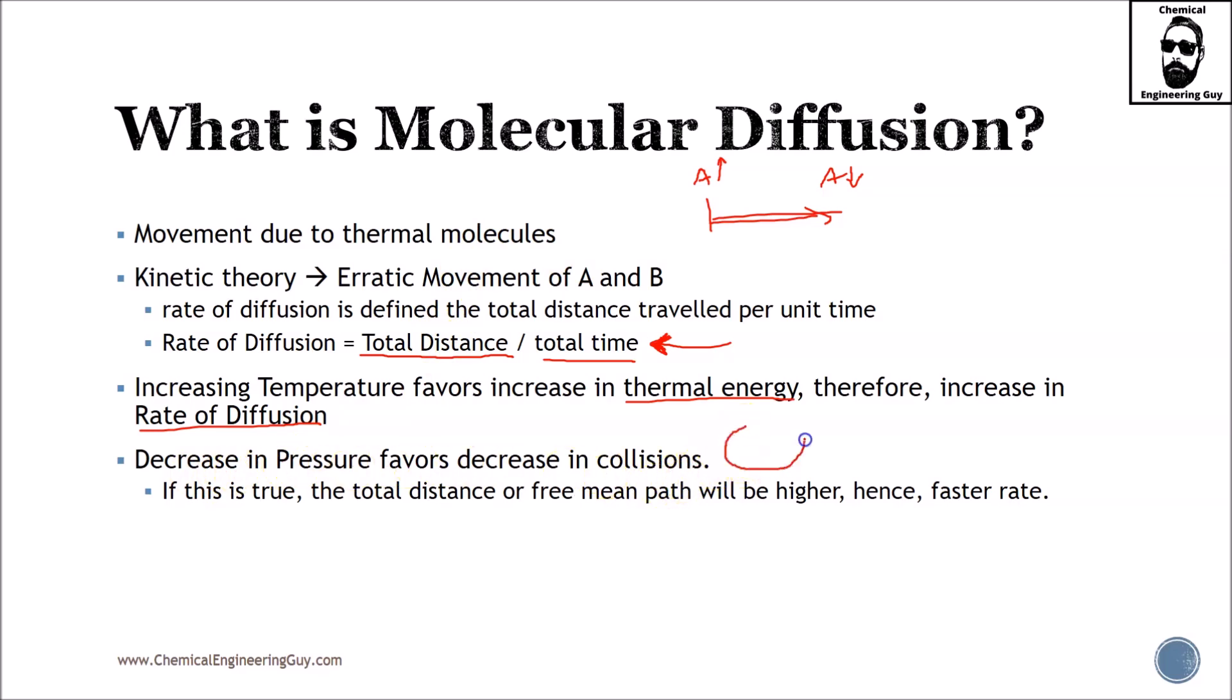Decreasing pressure favors decrease in collisions. Why? Because they have more space, therefore they will travel longer until they will collide. If this is true, the total distance or free mean path will be higher, hence faster rate. Okay, overall you should get through this. If you want to increase the rate, decrease the pressure and increase temperature.